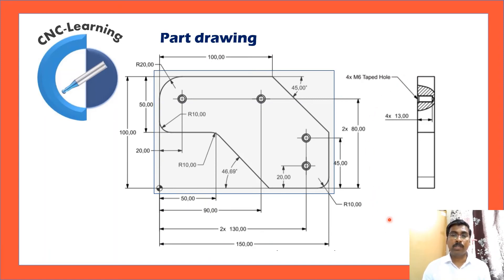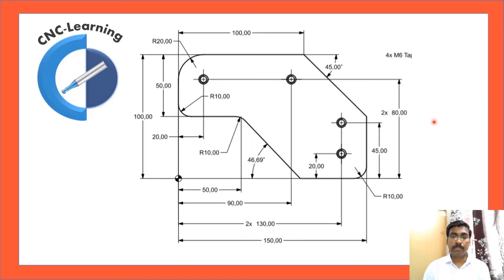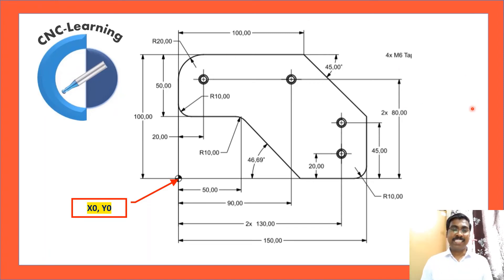Now let us come back to the part drawing. Here you can see the length, width, and all dimensions are defined. There are four M6 tapped holes — so first drilling, then center drilling, then tapping is needed. The first activity is defining the zero point. In this case, we have defined the zero here, and we are planning to start the cut here. Let us find out the coordinates for each point before making the program.